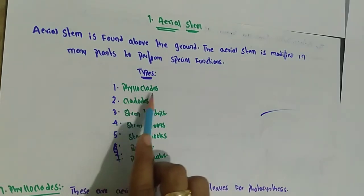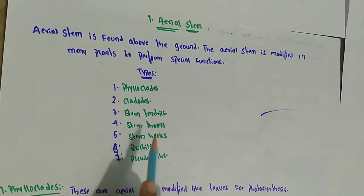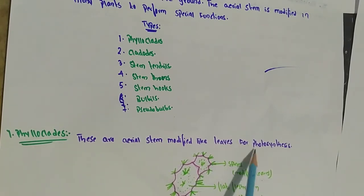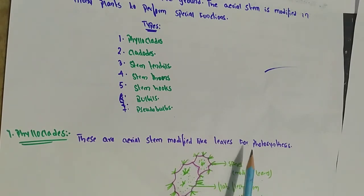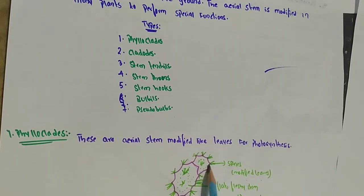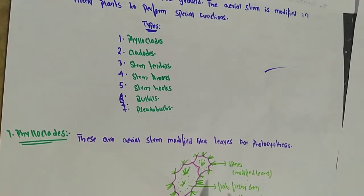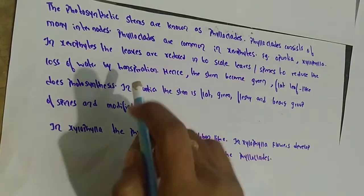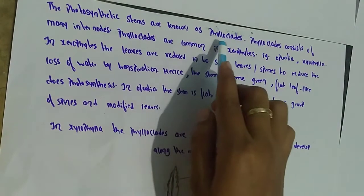There are seven types of modified aerial stems: phylloclades, cladodes, stem tendrils, stem thorns, stem hooks, bulbils, and pseudobulbs. The first type is the phylloclade — aerial stems modified to resemble leaves for photosynthesis. These are flat, fleshy photosynthetic stems. The leaves in these plants are modified into spines for protection.